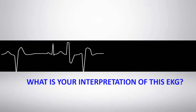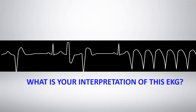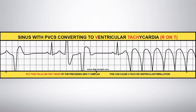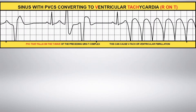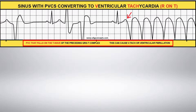What is your interpretation of this EKG rhythm strip? Sinus with PVCs converting to ventricular tachycardia, or R on T. With the R on T phenomenon, a PVC is interrupting the T wave of the preceding beat. This often leads to serious ventricular rhythms, such as VTAC or VFib.